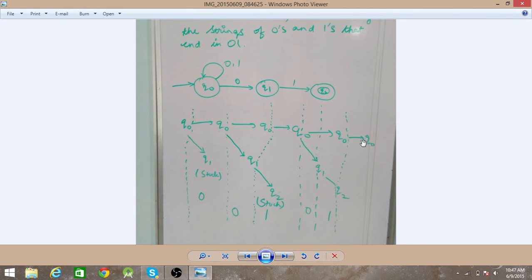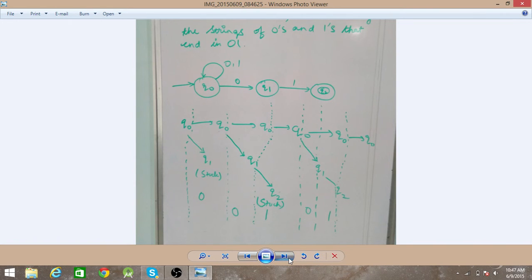So this keeps on happening and it will go to infinite if we provide input. And this is how it works. Next, we have the transition table for this.